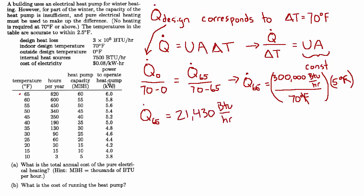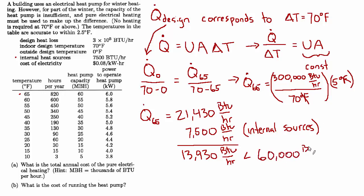And now we'll set that equal to any other ratio of heat loss divided by delta T. So we'll use q at T equals 65 outside, which we would like to know, divided by the corresponding delta T, which is 70 minus 65. And now we can solve for q_65. q_65 equals q_0, the design heat loss, 300,000 BTU per hour, divided by 70 degrees Fahrenheit, times this delta T, which is 5 degrees Fahrenheit. And that equals 21,430 BTUs per hour. Now some of that heat doesn't have to come from the heating system. Some of it's going to come from these internal heat sources.